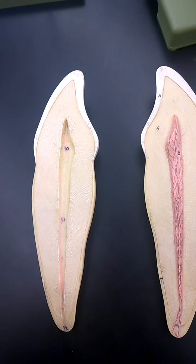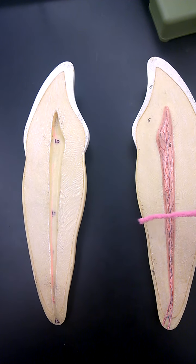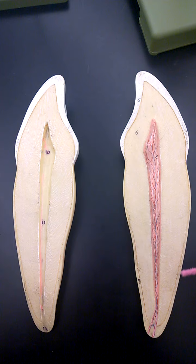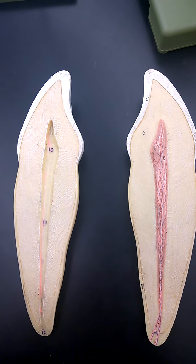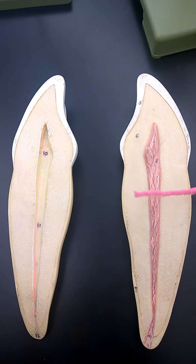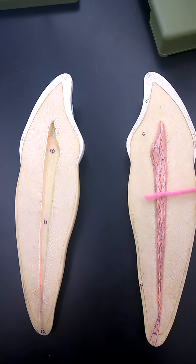And cementum is number seven, right here. And the dental pulp in the pulp cavity is right over here.